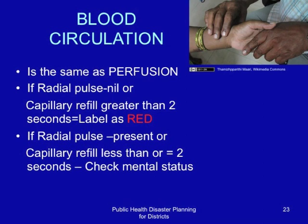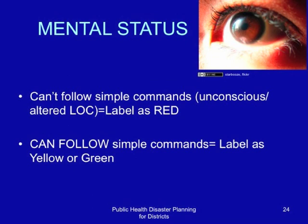In the mental status assessment, if the patient cannot follow simple commands, they are unconscious or have an altered level of consciousness — label as red. If they can follow simple commands and have passed all previous tests — respiration and saturation — then label as yellow if they are unable to walk, or green if they are walking.